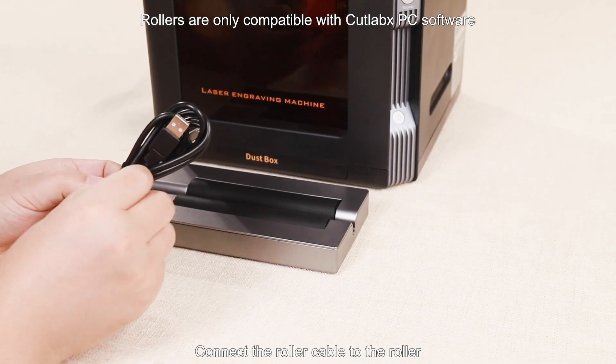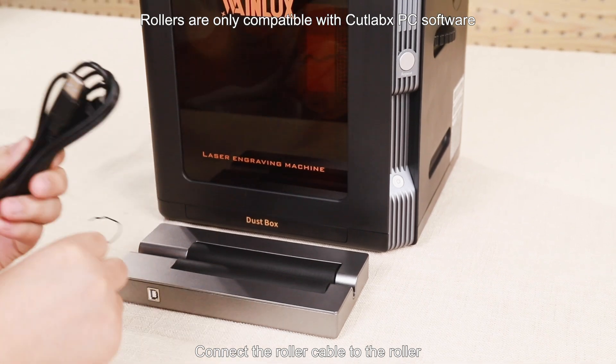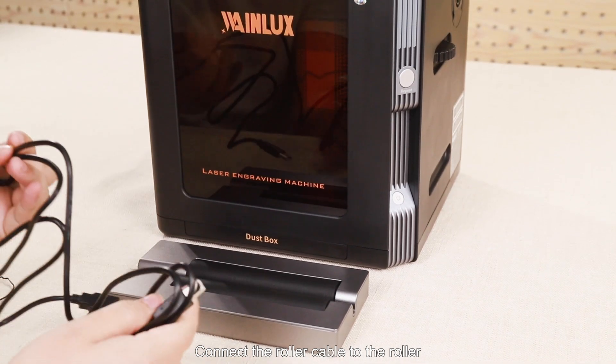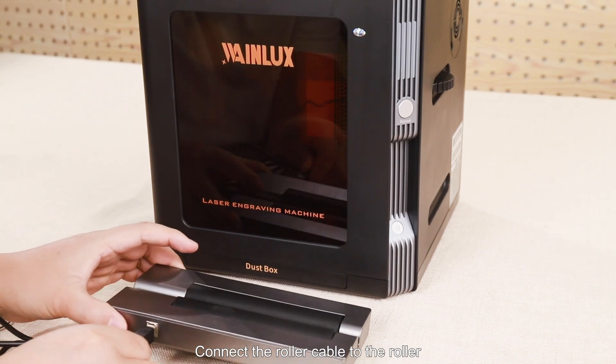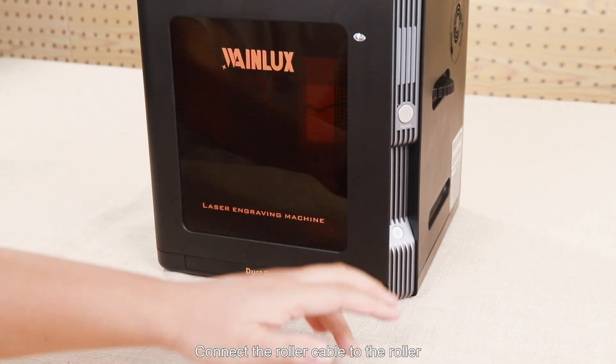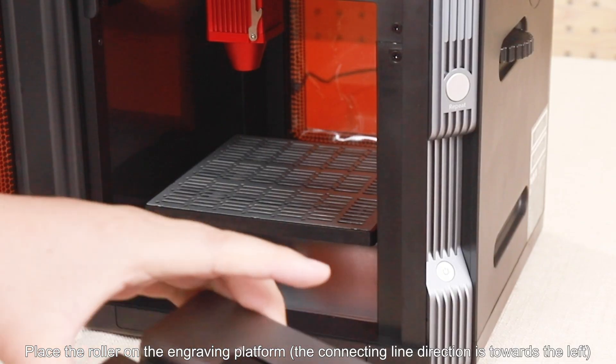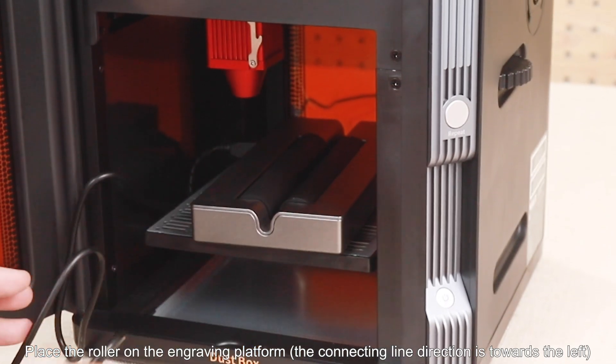Rollers are only compatible with CATLAB's PC software. Connect the roller cable to the roller. Place the roller on the engraving platform with the connecting line direction towards the left.